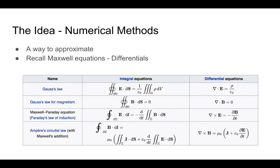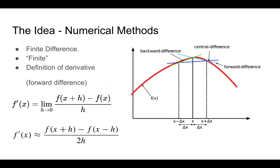Numerical methods is basically a way to approximate numerical values at a specific location. If we recall the Maxwell equations, we have both integral form and differential form. The differential form is very important in numerical methods because we have a way to numerically approximate derivatives. So let's look at the finite difference — the finite difference method is essentially a way to approximate derivatives.